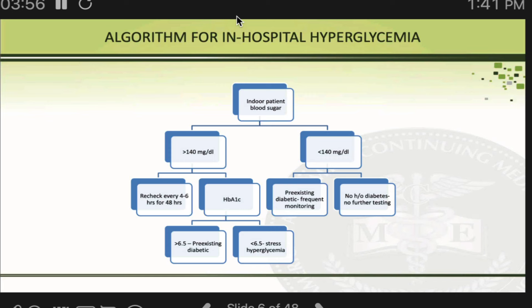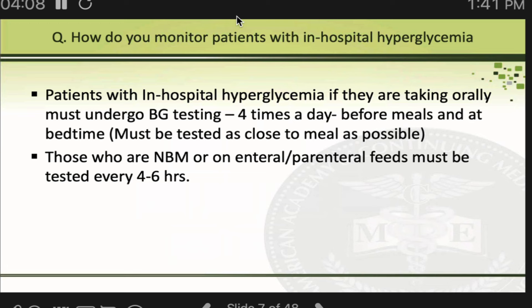If the patient's random blood sugar is less than 140, it could mean diabetes is well controlled, or no diabetes or stress hyperglycemia is present — we can then ignore it. Any patient admitted in the hospital should have their blood sugars monitored frequently. We have started using CGM in the hospital, but at minimum we should monitor four times a day: before breakfast, before lunch, before dinner, and at bedtime.